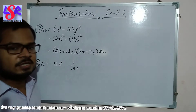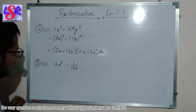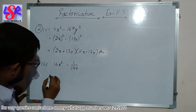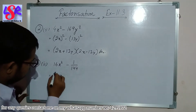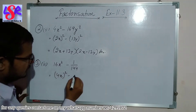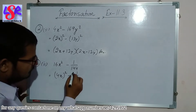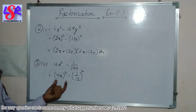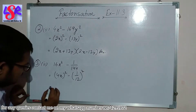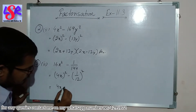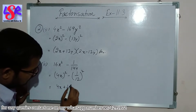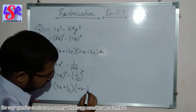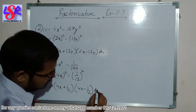Now question 3 second part: 16x²-1/144, which can be written as (4x)²-(1/12)². This is again in the form of a²-b², so this can be written as (4x+1/12)(4x-1/12) as the answer.